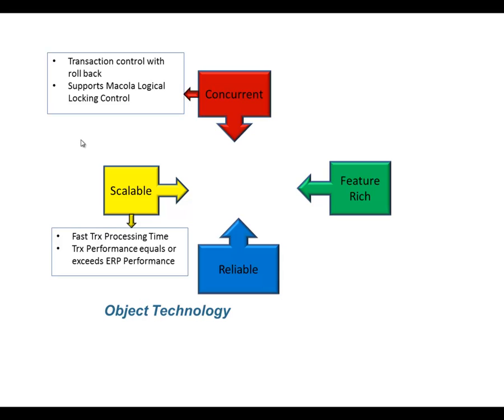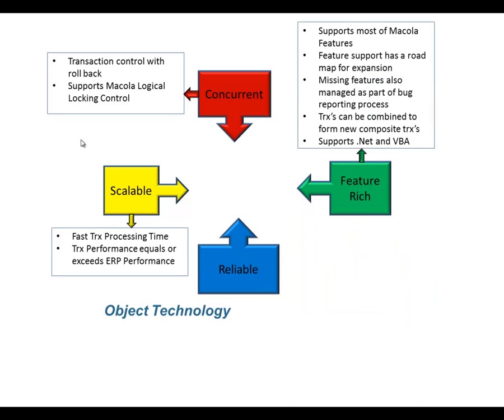It also needs to support Macola locking control. Macola locking control is important for detecting locks in Macola and the MAC lock table — that's the logical locking control of Macola. We write those locking records exactly the same way as Macola does. You'll sometimes receive a lock record message in Macola, and if we run into a lock record the same way in a business transaction, we will detect that lock as well.